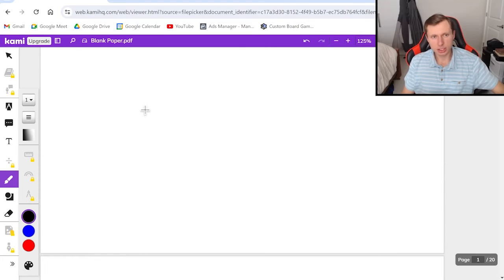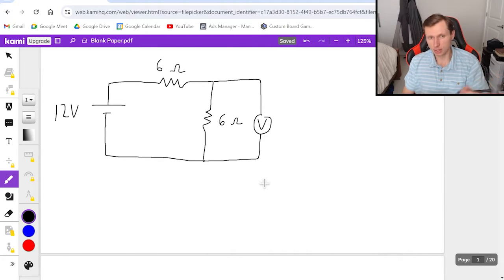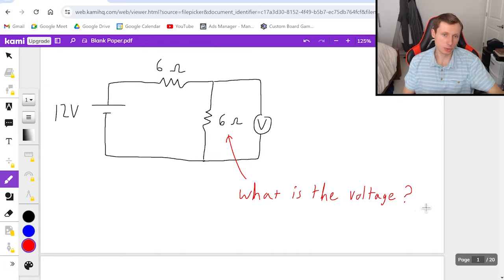So now let's look at some questions. The first one I have here is a circuit connected to two resistors like this. Both of these resistors are going to be six ohms. The battery is 12 volts and I'm going to place a voltmeter here around this six ohm resistor. And the question is what's the reading on the voltmeter?